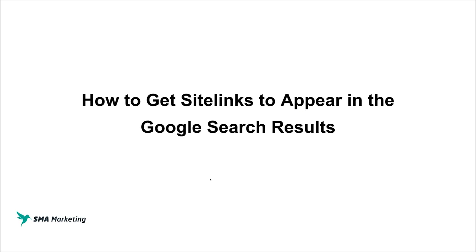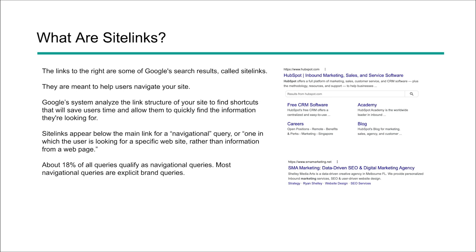All right, let's take a look at how we can influence or get site links to appear within the Google search results. So what are site links? Site links are links that actually show up underneath your main URL. As you can see here to the right, we've got a few examples showing two different ways that they can be shown.